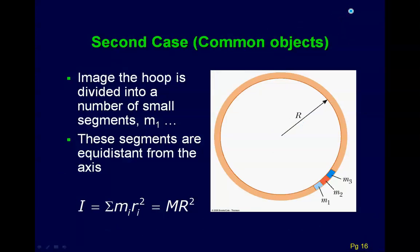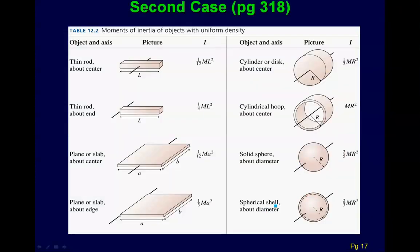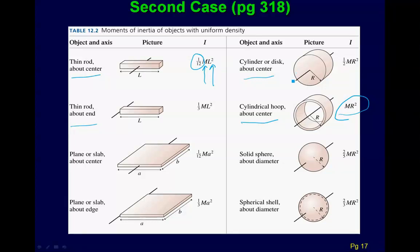The second case involves more common objects. What people have done is integrate — break the object into tiny point masses, add them up as MR squared for a whole bunch of them, and get the total moment of inertia. For example, a hoop has moment of inertia MR squared. There's a table of common shapes in your book on page 318: a thin rod about the center, thin rod about the end, a solid cylinder, a cylindrical hoop. All of these have the basic flavor of mass times distance squared times some fraction. For a common object, you can just look it up in the book or on Google.